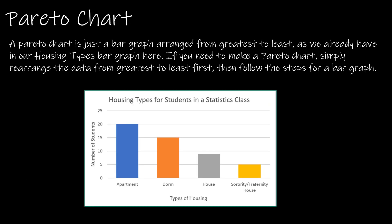A Pareto chart is another type of chart—not used often. The only difference between a Pareto chart and a typical bar graph is that it's arranged from greatest frequency to least frequency.